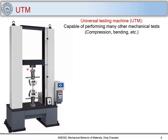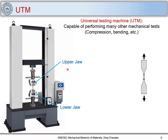We carry out this test using a UTM — Universal Testing Machine. It is called universal because it is capable of performing many other mechanical tests such as compression, bending, or three-point bending. The sample is placed between two jaws — an upper jaw and a lower jaw. In most machines one jaw is fixed; here the lower jaw is stationary and the upper jaw moves.